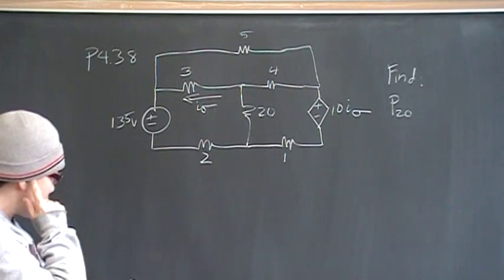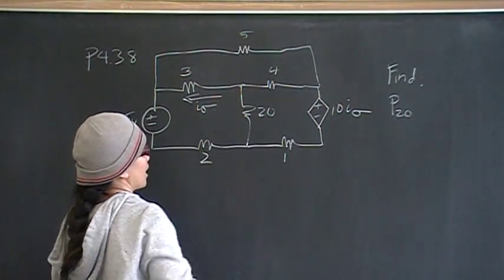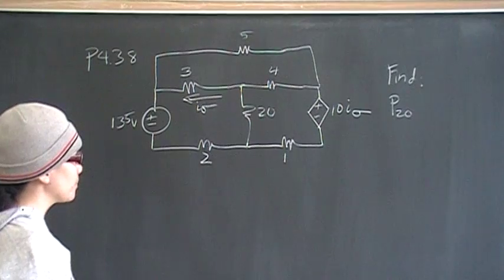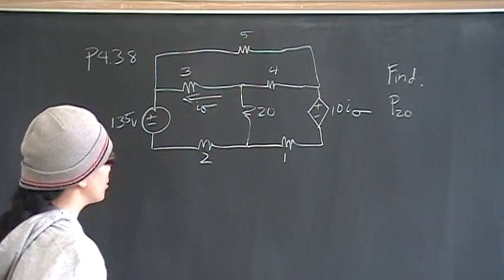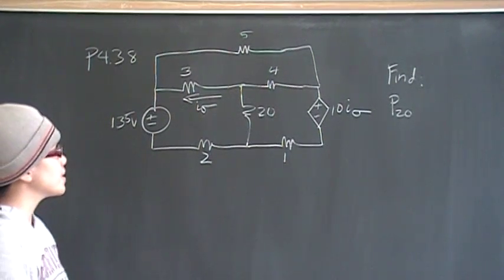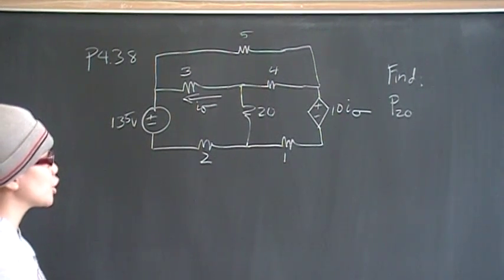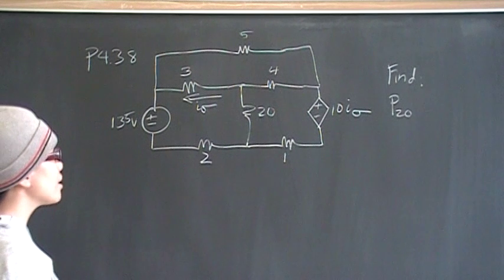So what we're looking for is the power dissipated by the 20 ohm resistor. And we're supposed to use mesh currents, although this problem is solvable either way by node voltage or mesh currents. But since this problem is on the section on mesh currents, we'll be using the mesh method to solve it.